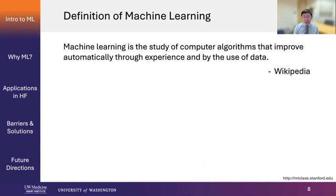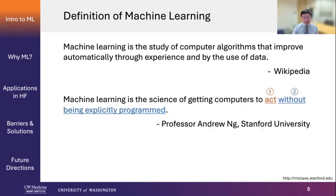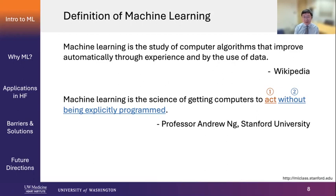How do you define machine learning? There are lots of different definitions. Wikipedia tells you that machine learning is the study of computer algorithms that improve automatically through experience and by the use of data. This pretty much literally explains what machine and what learning is, but it still doesn't really tell you what machine learning really is. I actually like this definition the most, by Professor Andrew Wu at Stanford University, really one of the pioneers of machine learning in the world.